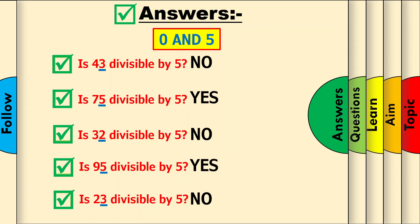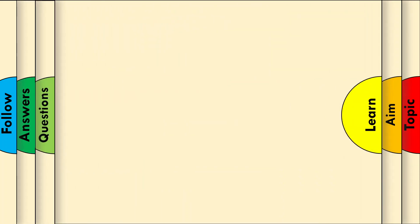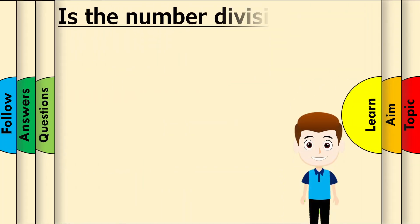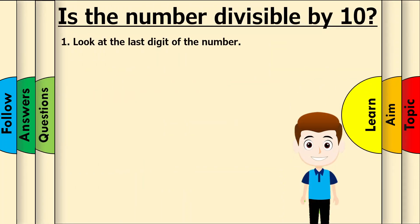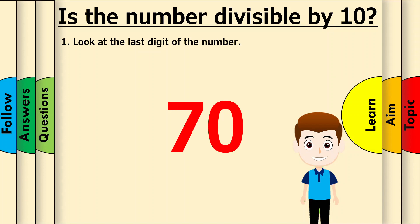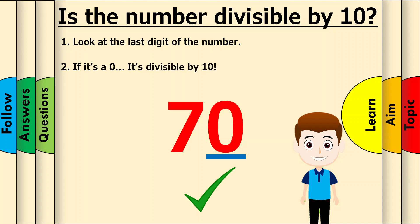Is the number divisible by 10? First, look at the last digit of the number. Let's take 70 for example. In this case, the last digit is 0. If this digit is 0 — which it is — it's divisible by 10. Let's just check by doing 70 divided by 10, which is the whole number 7.